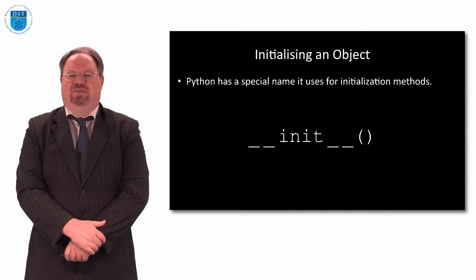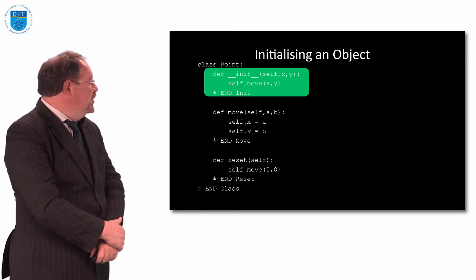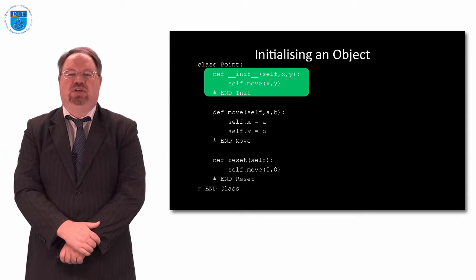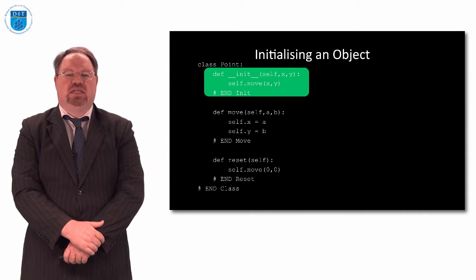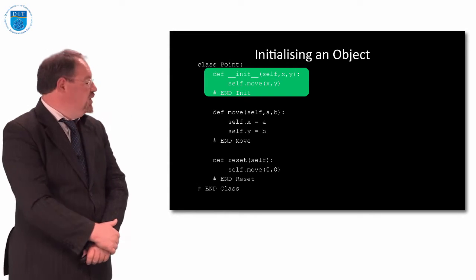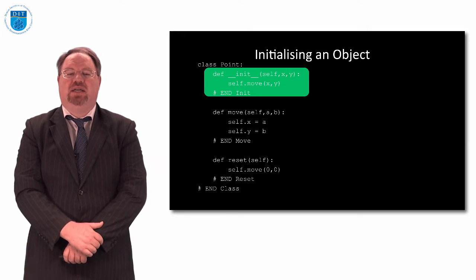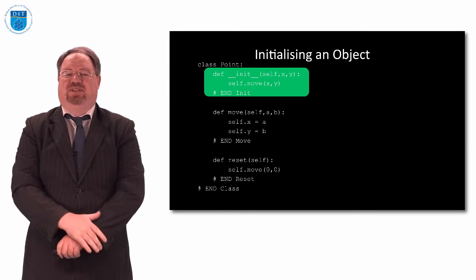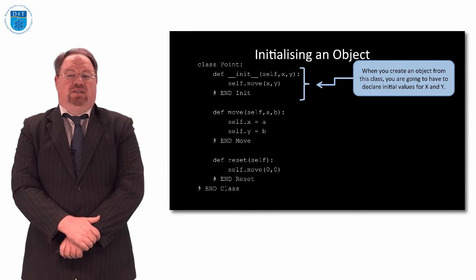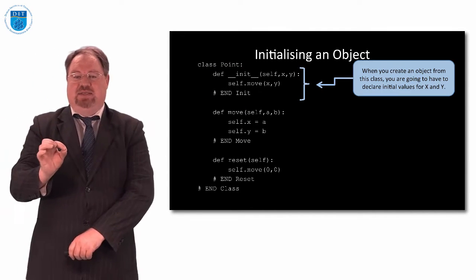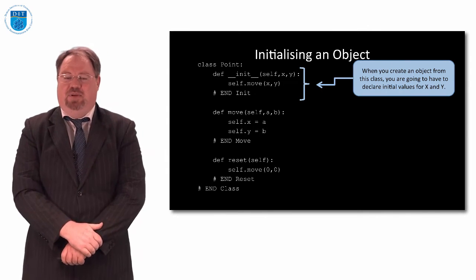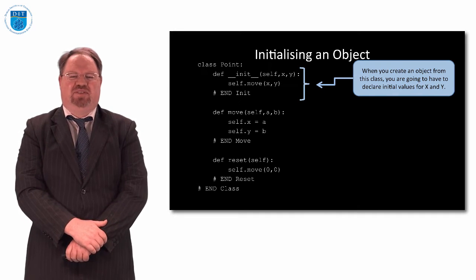So if we want to see what that looks like, we'll take our point class again. And now we've created an initialization. The initialization says there are two variables in each object of this type point, x and y, and let's just put some value into x and y. So when you create an object of this class, what it's saying is you have to put in values for x and y, or you'll get a problem. Not that you'll get an error, but you'll get a problem, definitely.